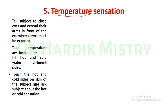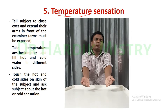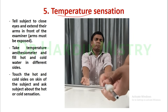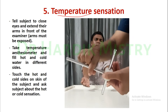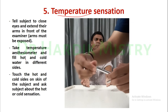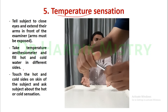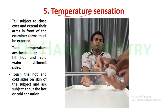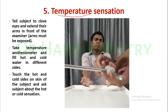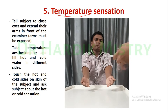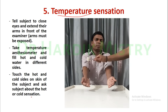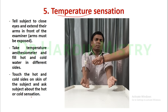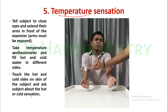Now the next is temperature sensation. Tell the subject to close his eyes and extend their arms. Arms must be exposed. Take a temperature esthesiometer and fill hot and cold water in different sides. Touch the hot and cold sides on the skin of the subject and ask the subject about the hot and cold sensation. Check whether the subject is right or wrong.